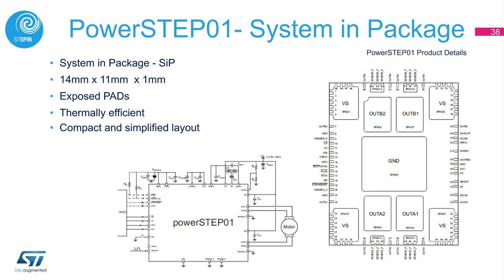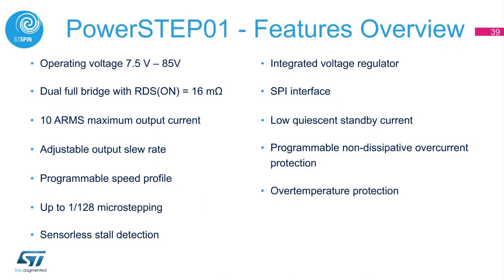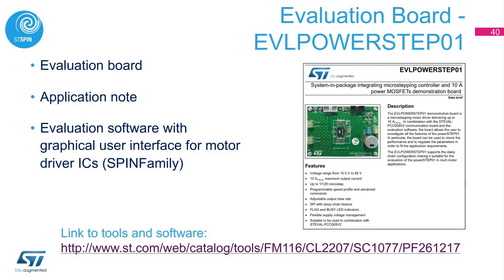The application schematics of the PowerStep01 are drastically simplified, requiring only a few external components. Summarizing the major features: the operating voltage is 7.5 to 85 volts; dual full-bridge with RDS(on) of 16 milliohms and maximum output current of 10 amps RMS; adjustable output slew rate; programmable speed profile; up to 128 microsteps in voltage mode control; sensorless stall detection; integrated voltage regulator; SPI interface; low quiescent standby current; programmable non-dissipative overcurrent protection; and over-temperature protection.